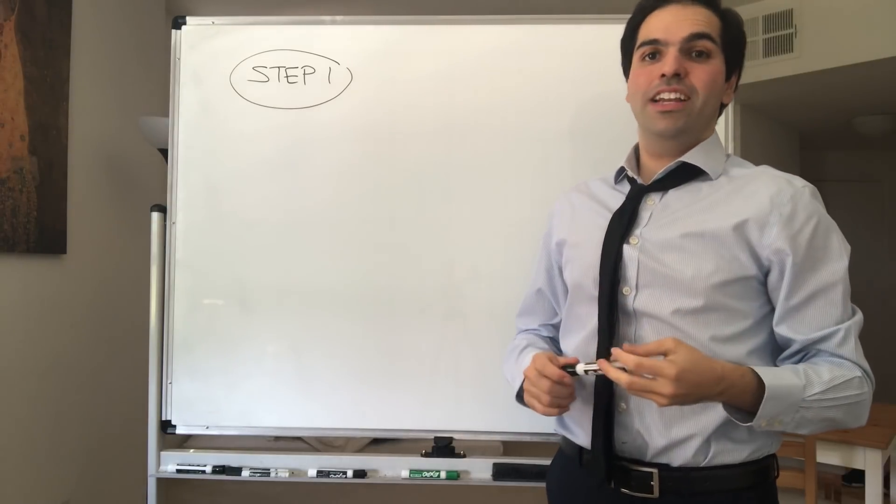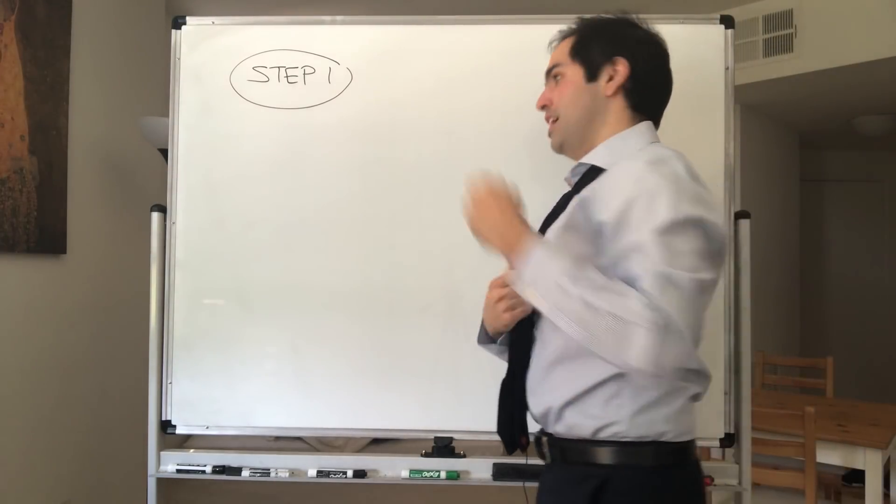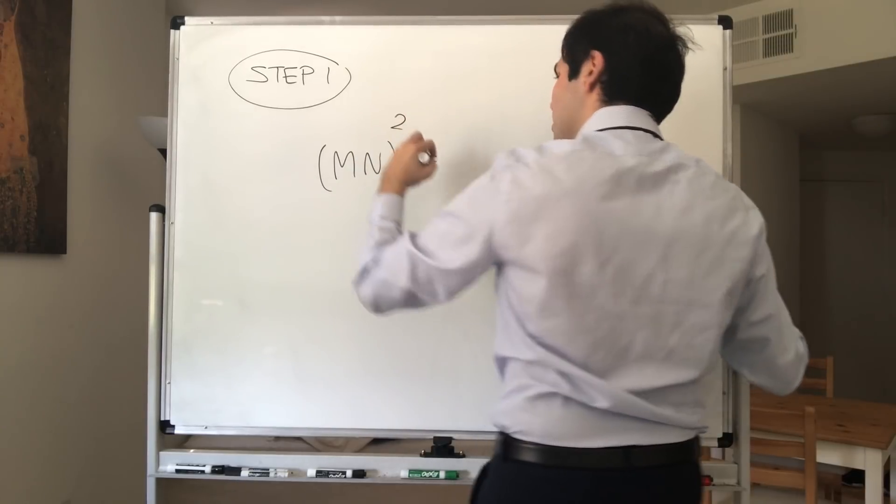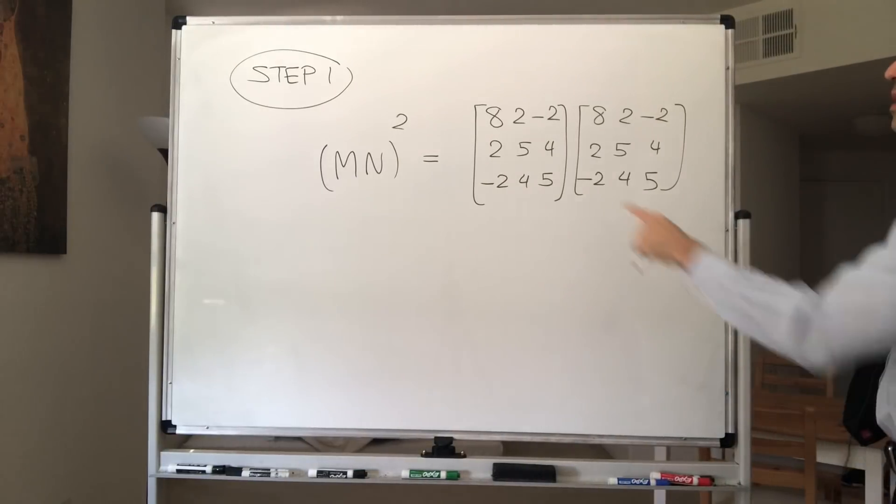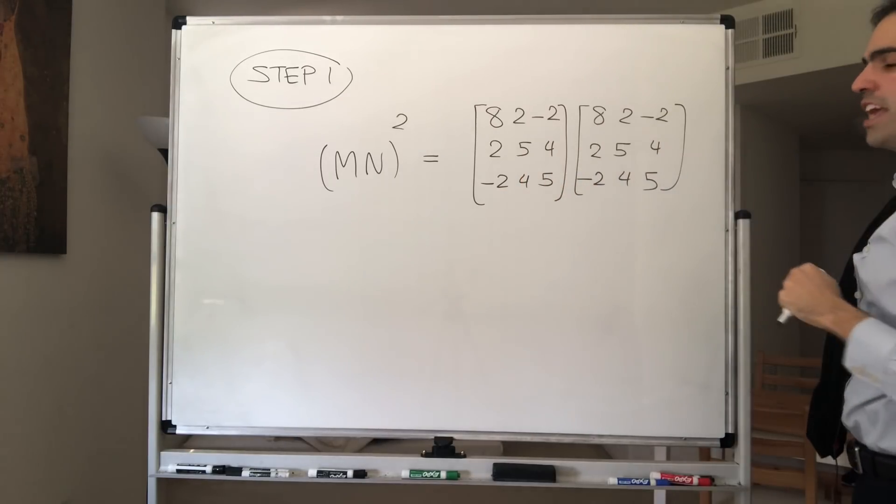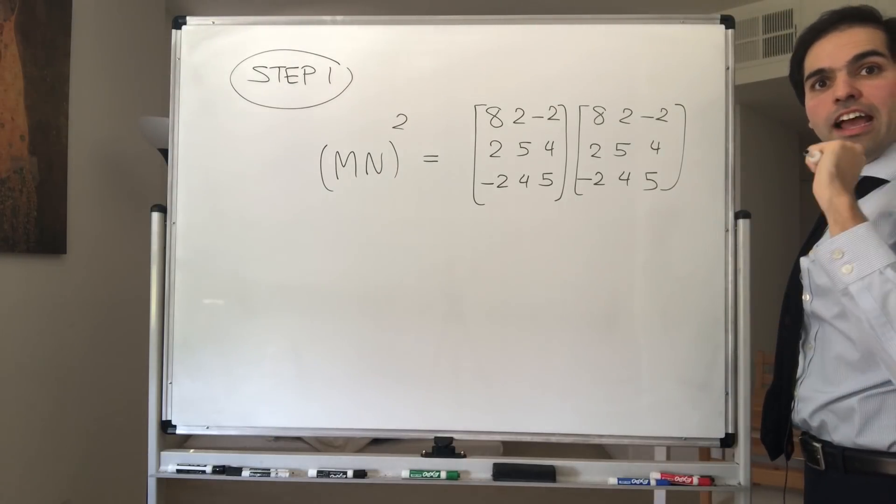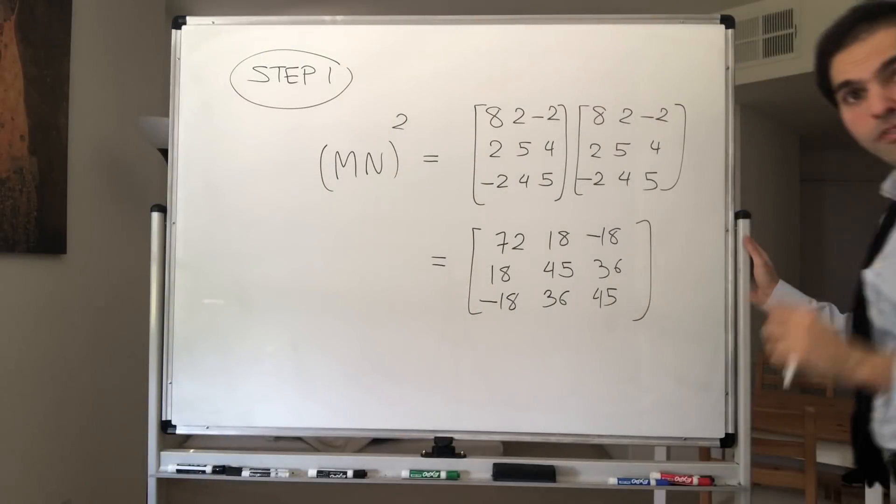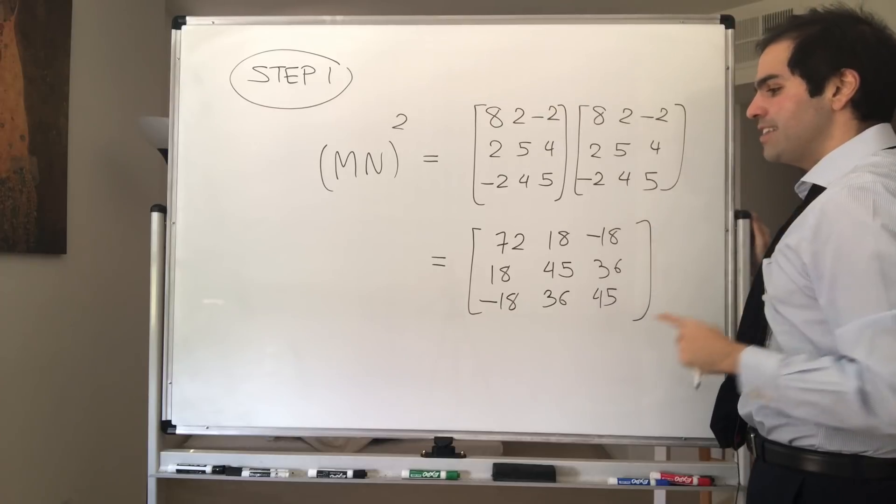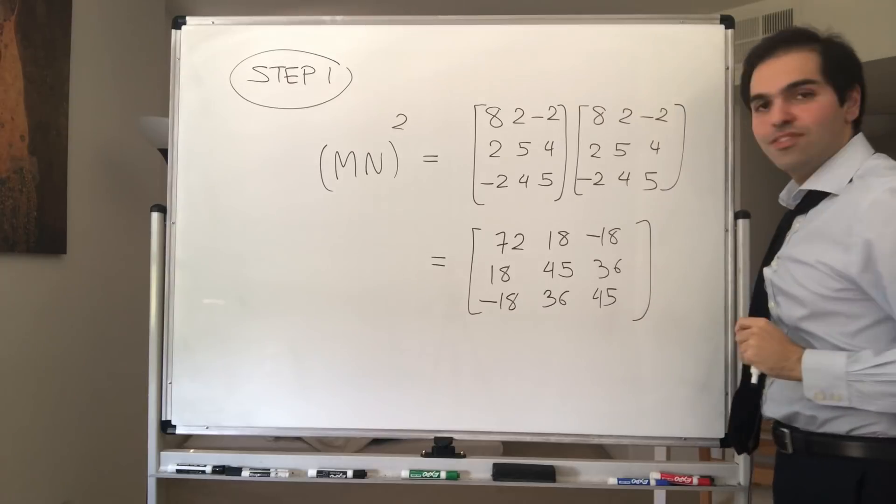Alright, first step, because why not, let's calculate MN squared. So MN squared becomes 8 2 -2, 2 5 4, -2 4 5 times 8 2 -2, 2 5 4, -2 4 5. And then magic. So we end up getting this pretty horrible matrix, 72 18 -18, 18 45 36, -18 36 45.